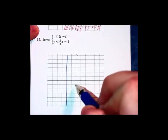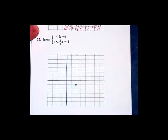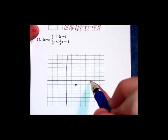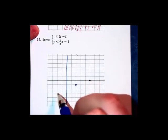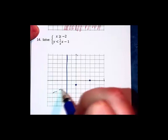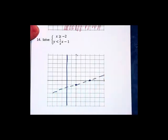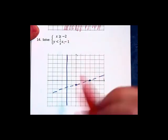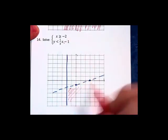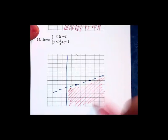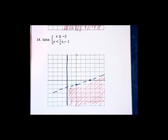The second inequality has a y intercept of negative 1. The graph goes up 1 and over 3 to the right. This is going to end up being a dashed line graph. It's in slope intercept form, so the less than that we see there does mean shade below. And so we have our solution region where I've just shaded it.